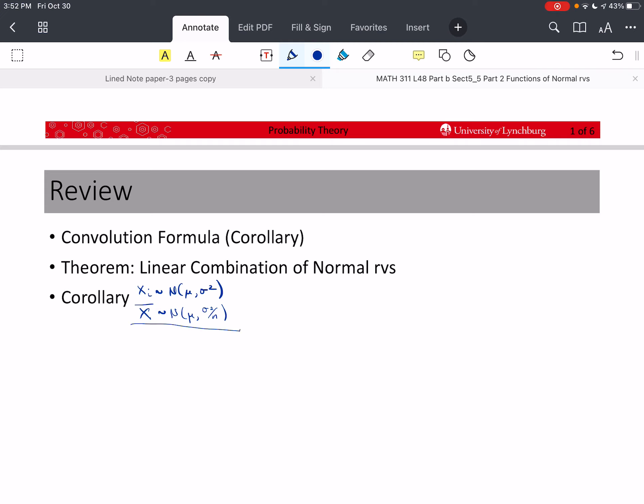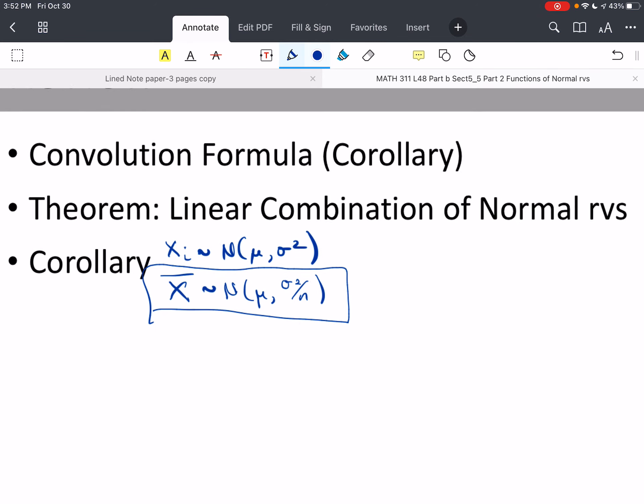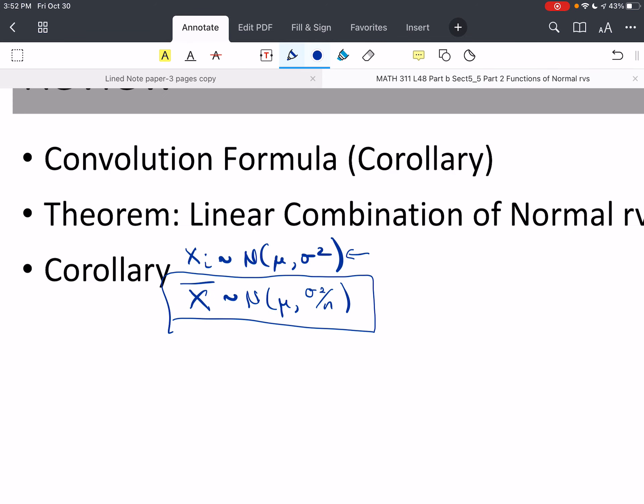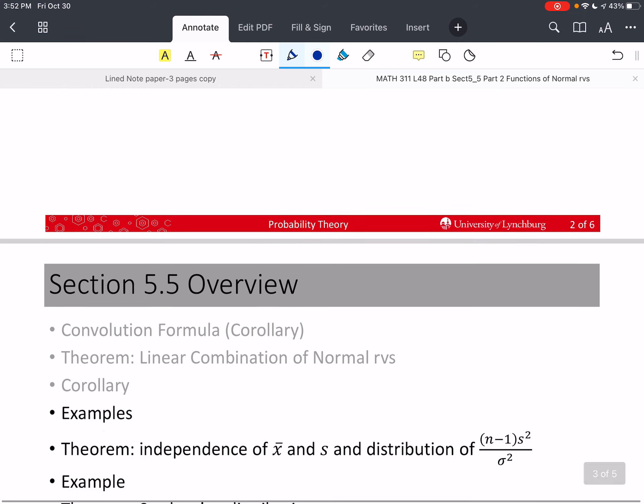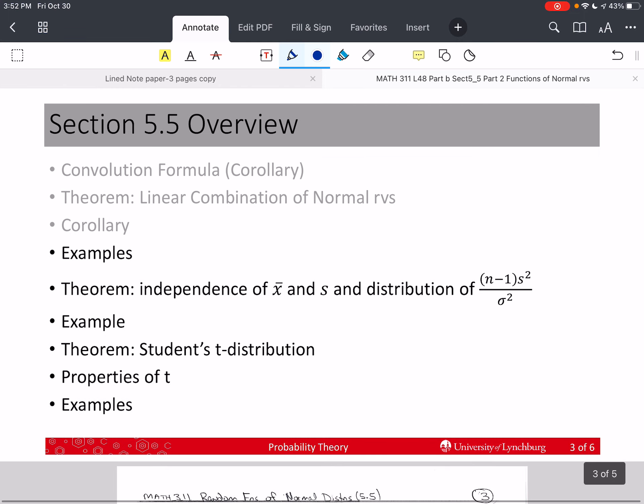If the mean of the original observations or random variables, xi, have a mean μ and a variance σ², then the distribution of x-bar is normal with a mean μ, the same mean, but the variance is much smaller, σ² over n.